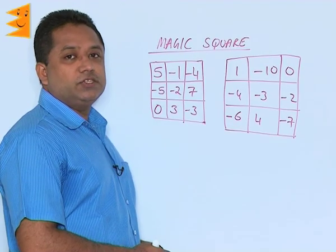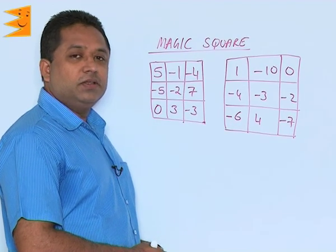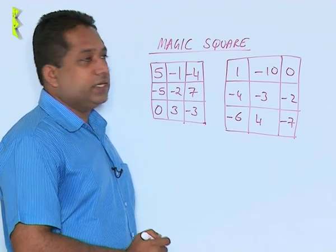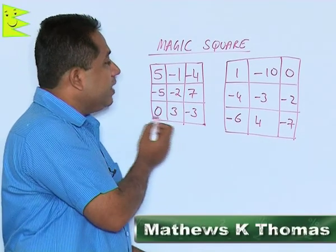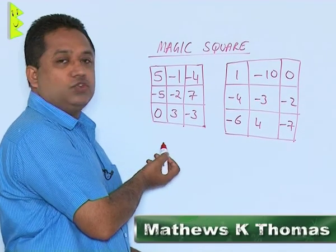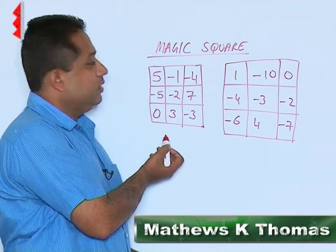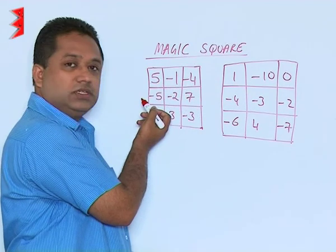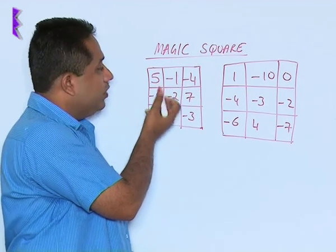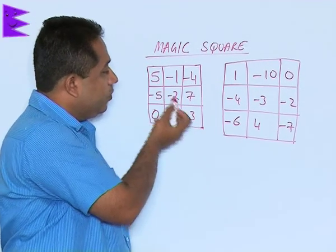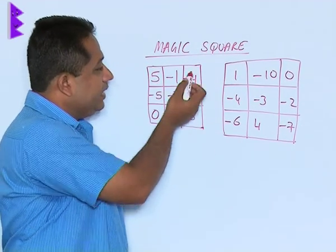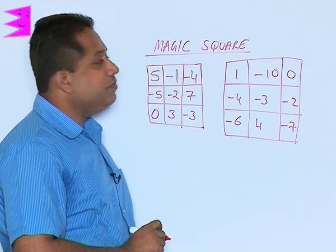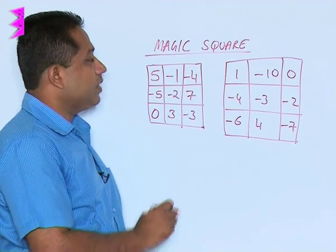Let us look at magic squares. What is the meaning of a magic square? This is a 3 by 3 magic square. We have to add the columns and the rows. We can also add diagonally. All the totals should come out the same. That is the meaning of a magic square.